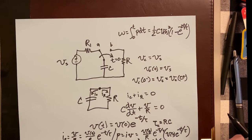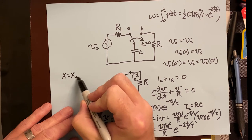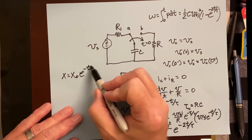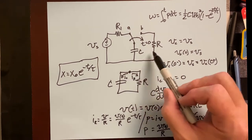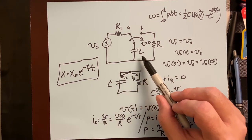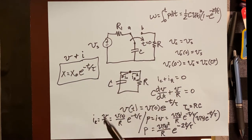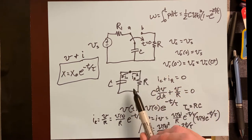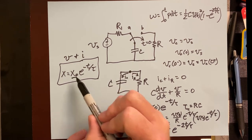To summarize solving an RC circuit: find the initial voltage, determine τ, then write the solution. In general, for either voltage or current, x(t) = x₀ · e^(-t/τ). This applies to the natural response of any RC circuit and also to RL circuits, though it only applies to voltage and current — not to power or energy.